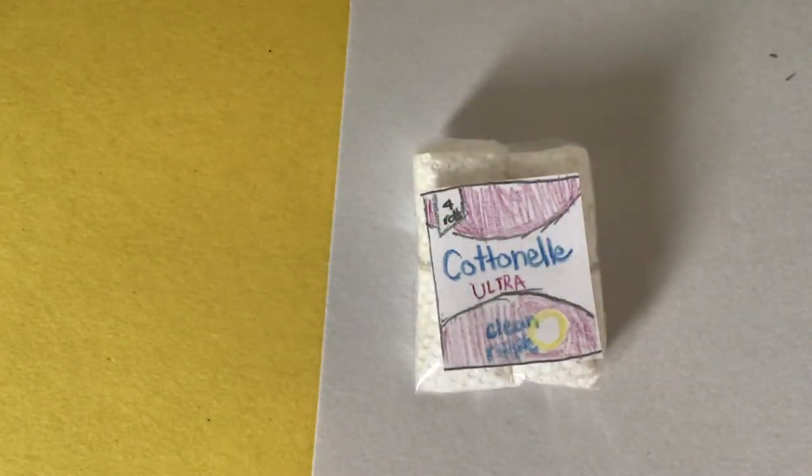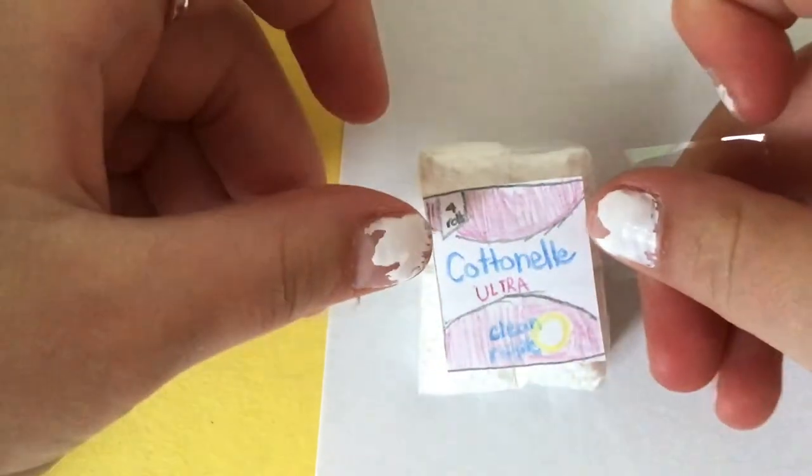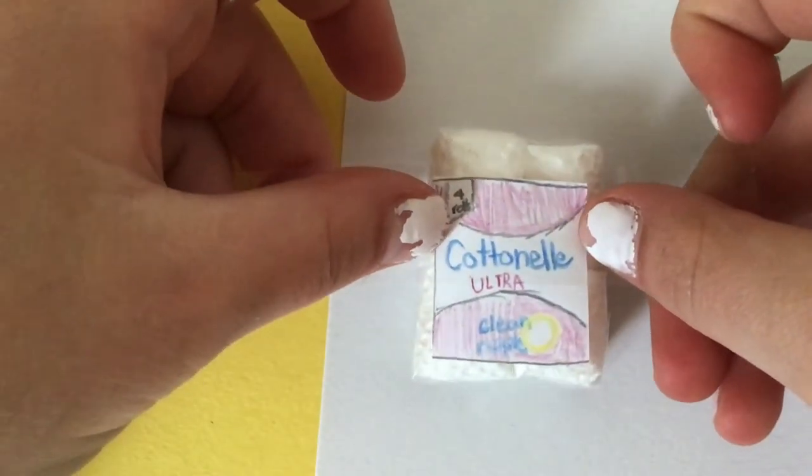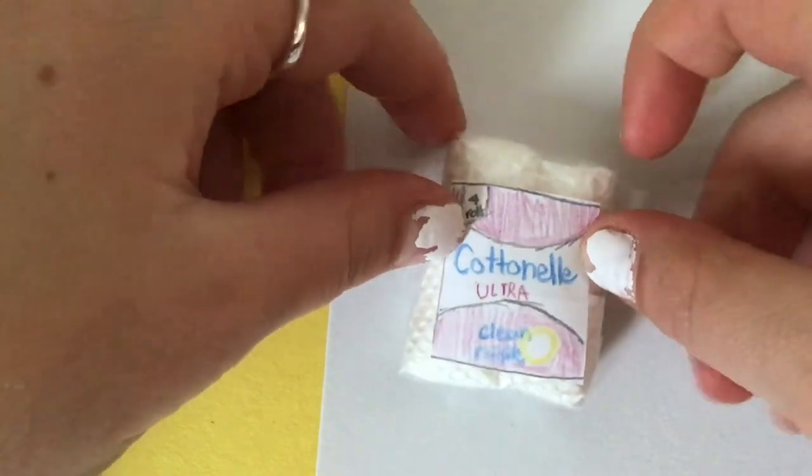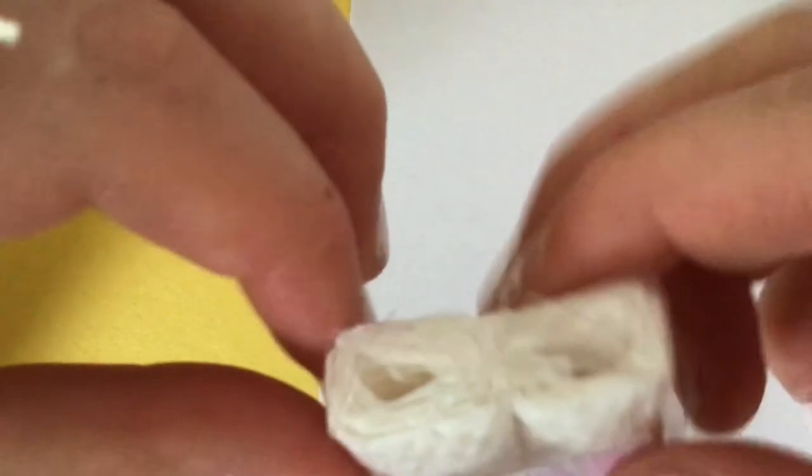Next, what you want to do is secure it all with tape. Make sure to keep it straight. Secure the whole paper and box with tape.